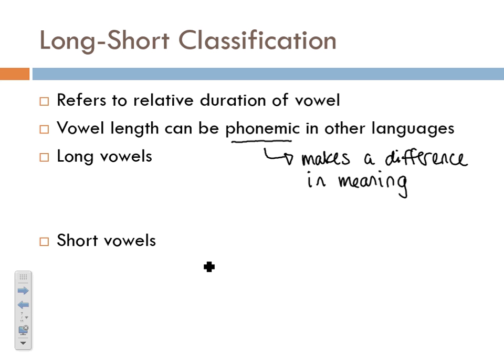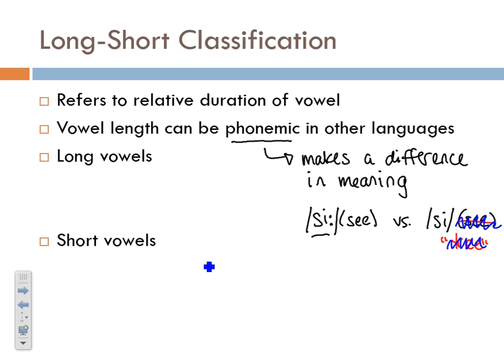For example, if I say the word 'see' and hold it out really long, versus saying it normally, you're not going to understand them as two different words. That's what would make it phonemic — if different durations produced different words. No matter how long I hold out that 'ee,' it just means the same word 'see.' So you just sound goofy rather than like you're saying a different word.